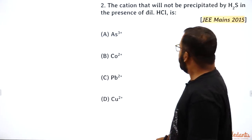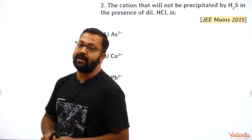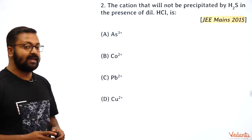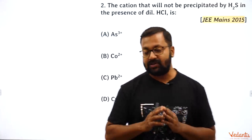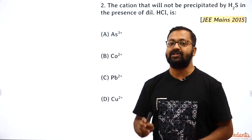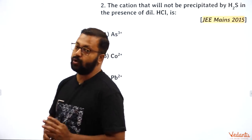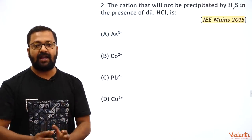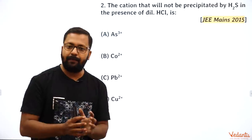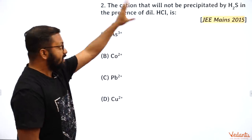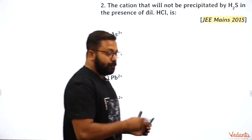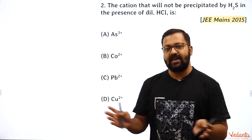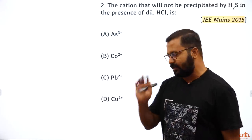Next question (JEE Mains 2015): which cation will NOT be precipitated by H₂S in the presence of dilute HCl? H₂S in the presence of dilute HCl is the group reagent for Group 2. A group reagent precipitates a specific type of ion — it gives a sulfide precipitate for Group 2. Group 2 is divided into subgroups 2A and 2B, and there's a quirky way to remember this.